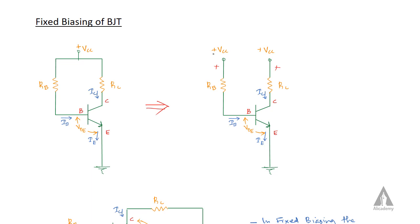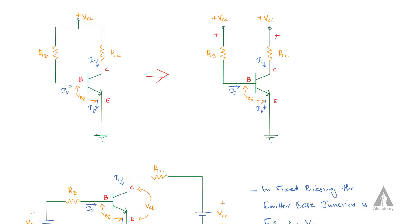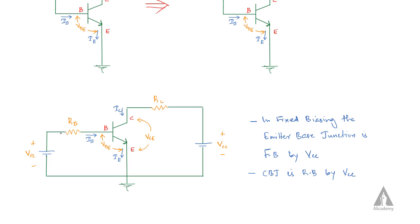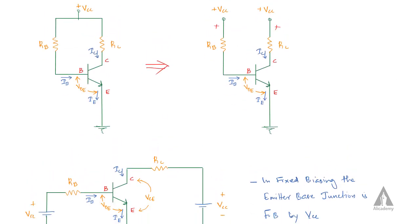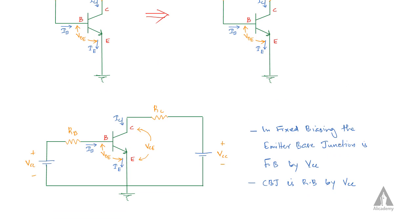VCC is a DC voltage having a positive terminal and a negative terminal. RB is connected to the positive terminal of VCC and RC is also connected to the positive terminal of VCC. In fixed biasing, the emitter-base junction is forward biased — the base (p-region) is connected to the positive terminal and the emitter (n-region) to the negative terminal. The collector-base junction is reverse biased because the n-region is connected to the positive terminal.